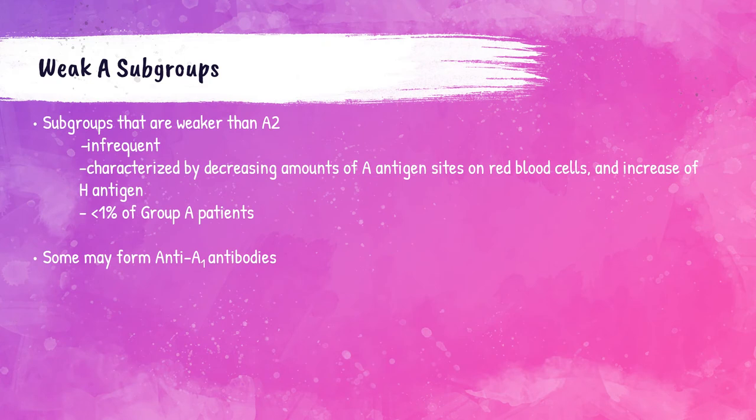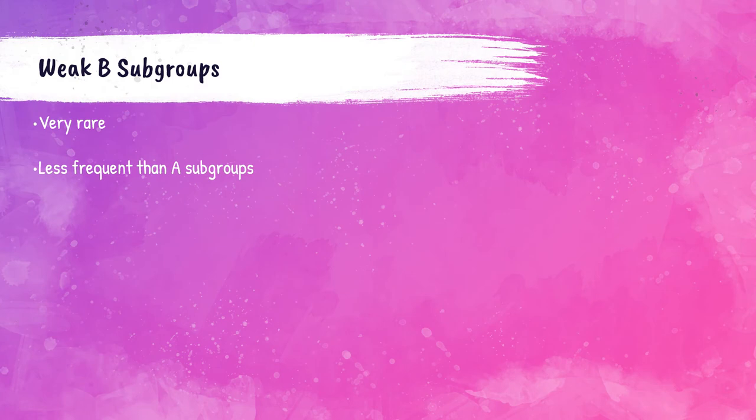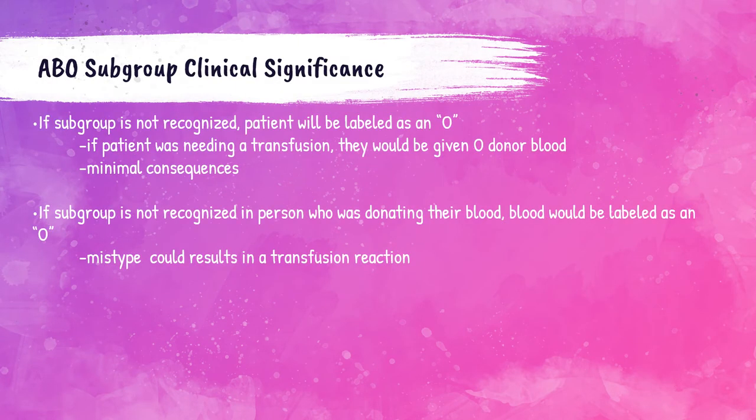There are some subgroups of A that are weaker than A2, but these are very infrequent, accounting for less than 1% of group A patients. Some of these patients may also form anti-A1 antibodies. Like with A subgroups, weak B subgroups exist as well, but they are very rare and less frequent than the A subgroups. These subgroups do have clinical significance.